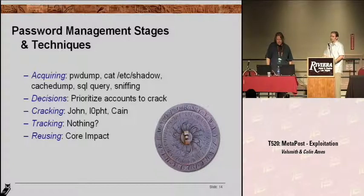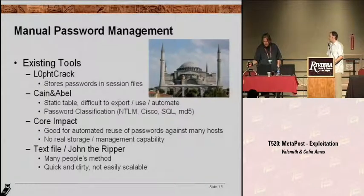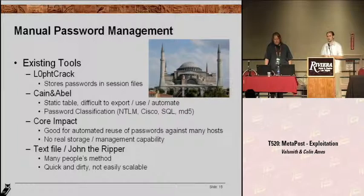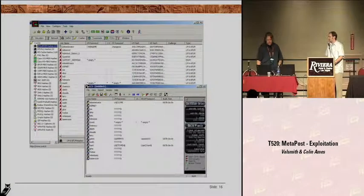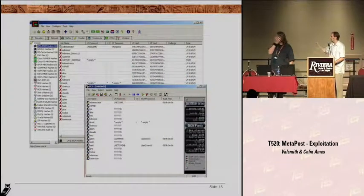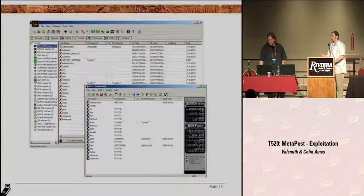We want to track it so you can look back at what you've done, where you're going, as well as reuse it. Here are some existing tools: you have L0phtCrack, Cain and Abel, and Core Impact, which will allow you to view a session, view hash types, decide how you want to crack them — whether you're going to use rainbow tables or just a John-type approach — and then track them. These tools are out there but have limited features, and they're not terribly useful when we're talking about tens of thousands of boxes.